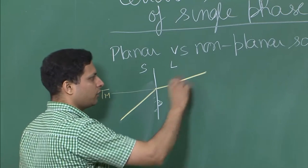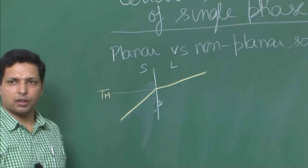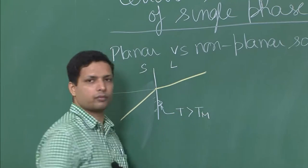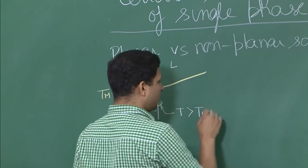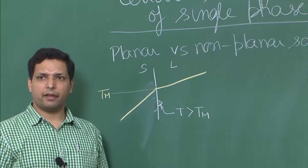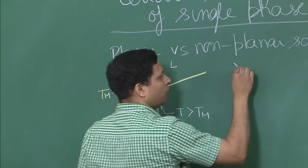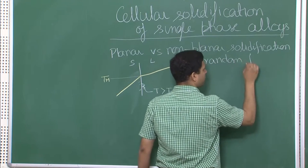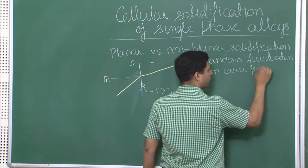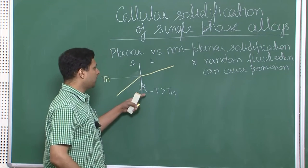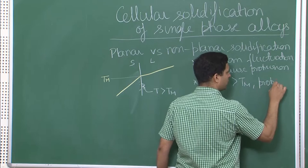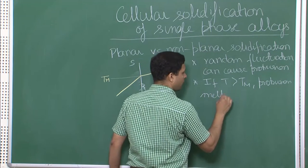The rest is liquid and the liquid temperature profile is like this. What happens to this solid protrusion? You would see that the temperature it is exposed to is greater than T_m. Although some random fluctuations may cause the growth of such protrusions and cells, these cells will not be stable — they will get melted away, they will vanish. So, random fluctuations can cause a protrusion, but if T is greater than T_m the protrusion melts away, meaning it is unstable.